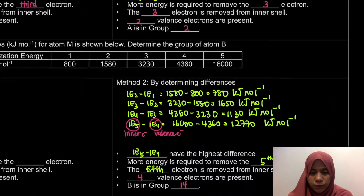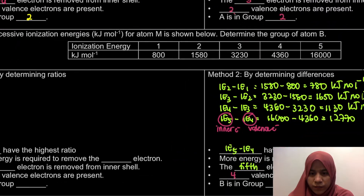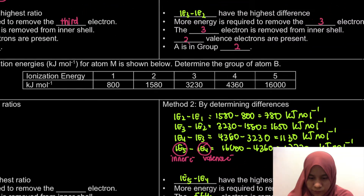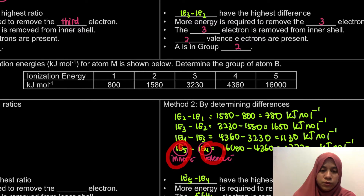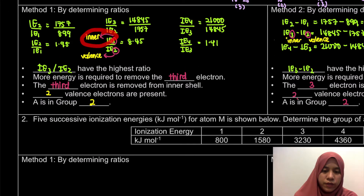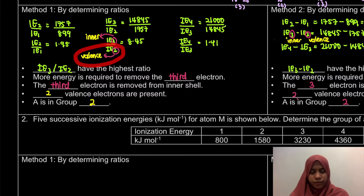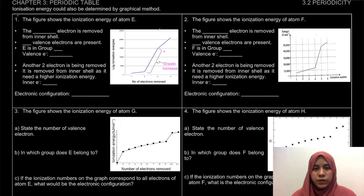It's up to you which method to use — either the ratio or the differences. Remember, for the differences method, it's inner minus valence. For the ratio method, the numerator is the inner part and the denominator is the valence part. Examples 3 and 4, I believe you could try yourself.